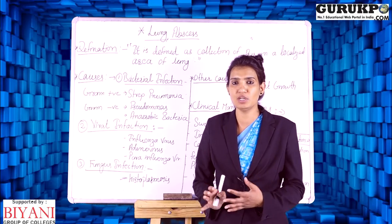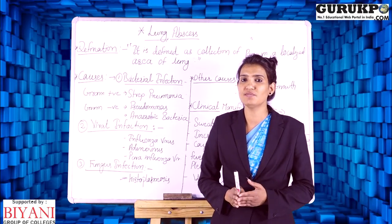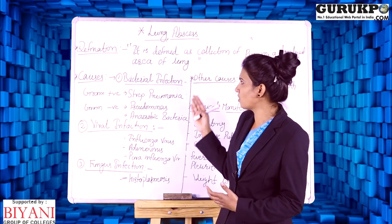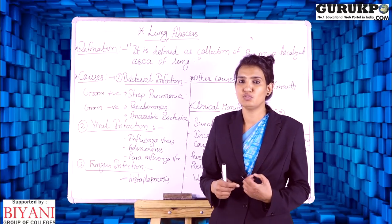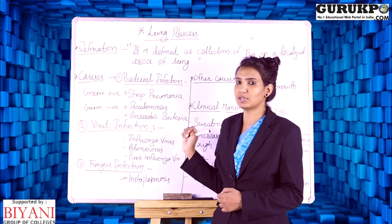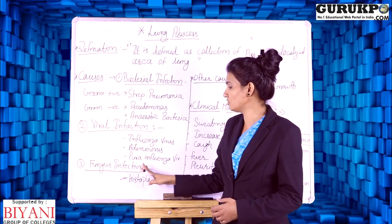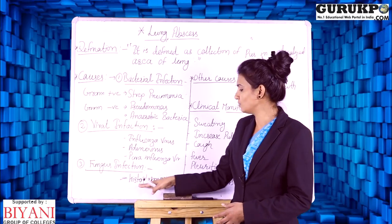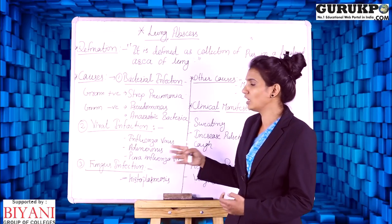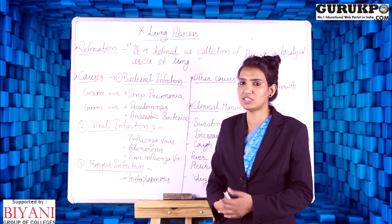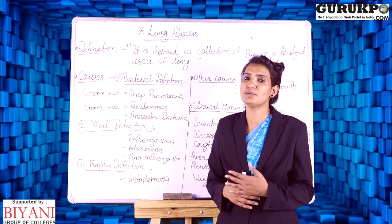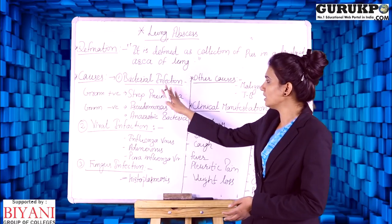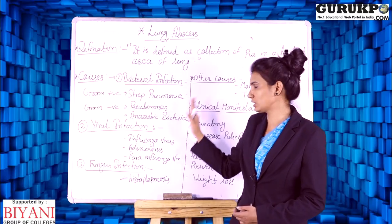These viruses enter the body through the respiratory tract into the lungs. After entering, they affect a particular area of tissue, and in that area pus collection occurs due to the infection. Third is fungal infection — the type of fungus included is histoplasmosis. Like bacteria and viruses, this fungus also enters through the respiratory tract and causes infection and pus collection in a particular part of the lungs.